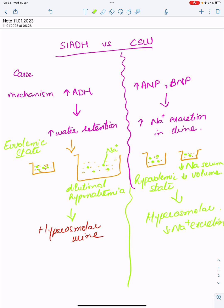The main differences are that because of increased ADH there is water retention and there is dilutional hyponatremia. Serum sodium will be low, urinary sodium can be high or normal, and urine will be more hyperosmolar. In case of cerebral salt wasting there is increased sodium excretion in urine, and there will be hypovolemic state because not only there is loss of sodium but there is also loss of water. So more sodium will be excreted in urine.